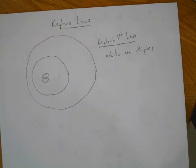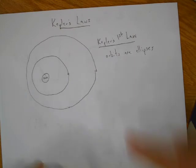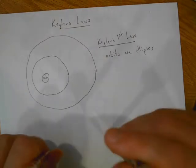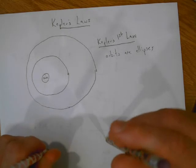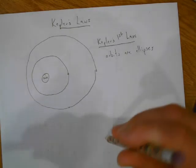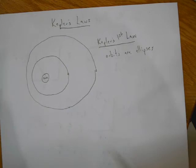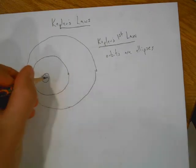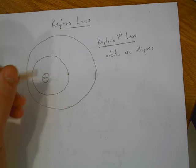So imagine that you had a piece of string and you had two pencils, so you went like this and this, and then you put a piece of string around those two things and you drew a circle, or an ellipse. Well, that's going to be an ellipse, and the sun is always going to be at one of those focus points.